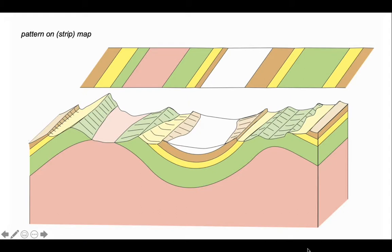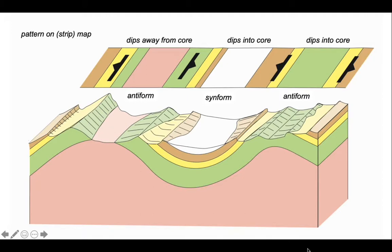Well, first, let's capture the direction of dip of the layers. So these are the orientations of bedding. And you can see that for an antiform, the beds dip away from the core in the direction pointed by those triangles. And for the synform, they point in towards the core of the synform.